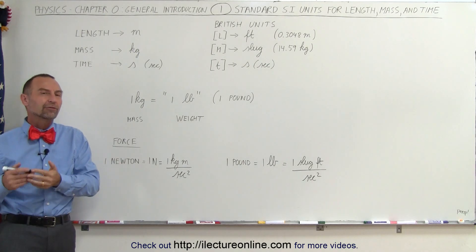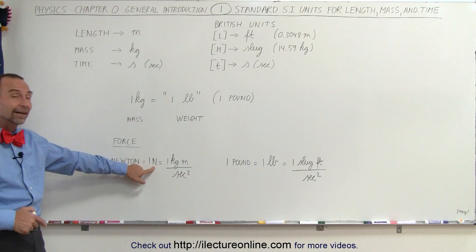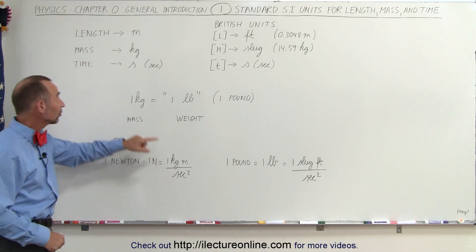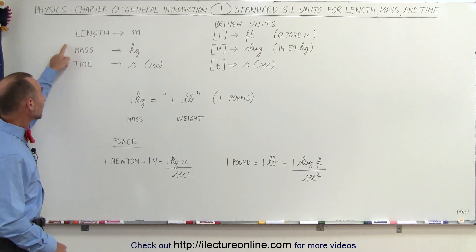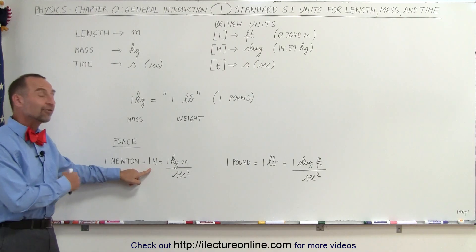For example, if we want to define force, we use the Newton. And notice, we write, we use the letter N to denote Newton. And the Newton is made up of kilograms, mass, and seconds. So the three basic units, length, mass, and time, then appear in the definition of a Newton.